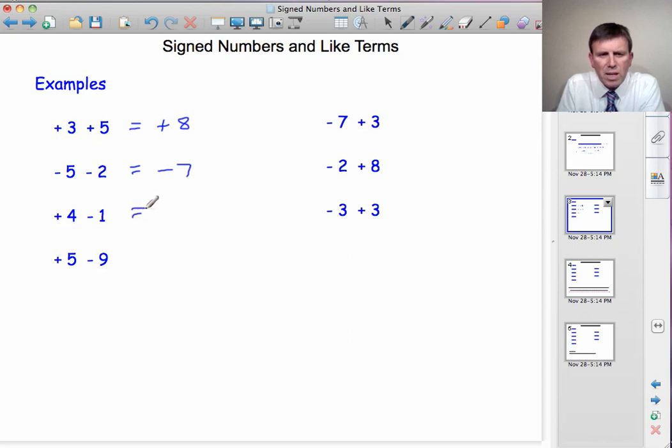Now we've come to some examples with different signs. Plus 4, take away 1. We've got more positives, so the answer will be positive. 4, take away 1, is 3. Answer, plus 3.